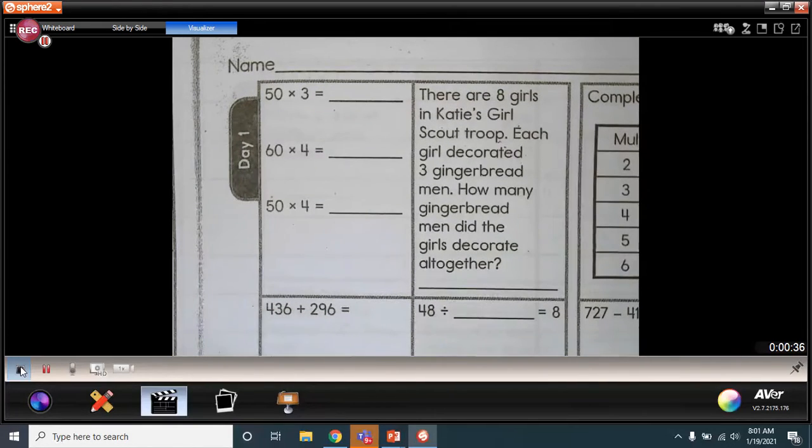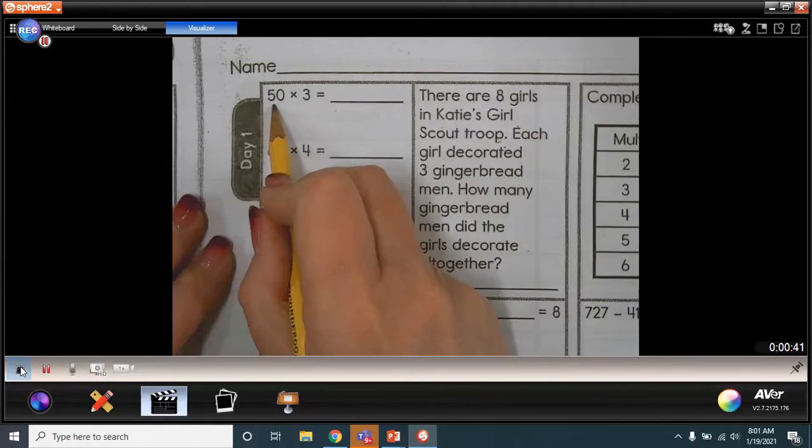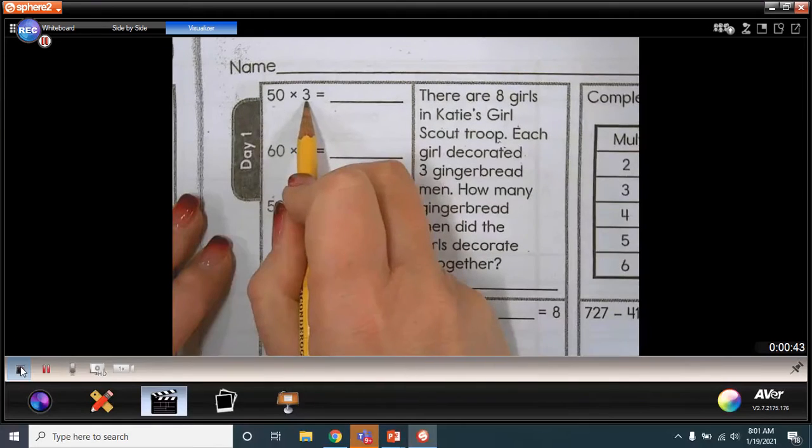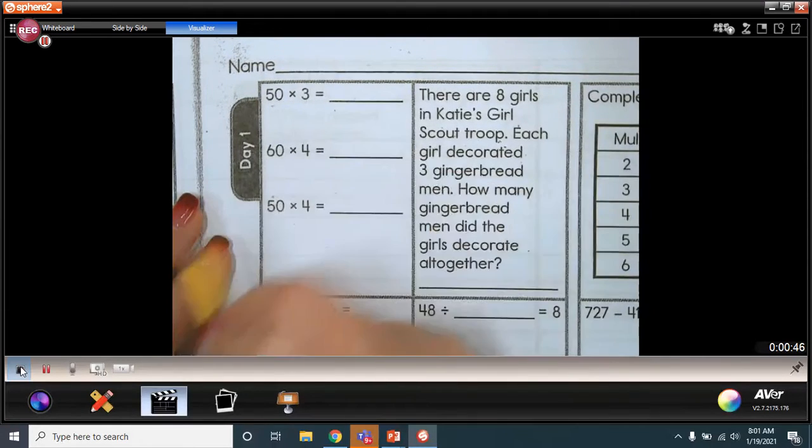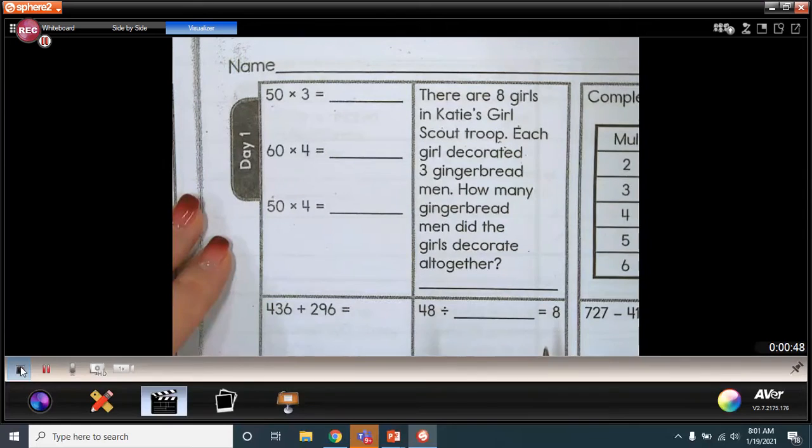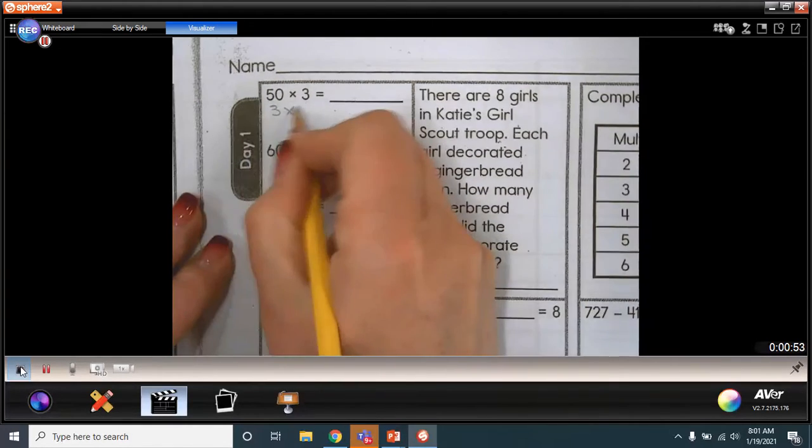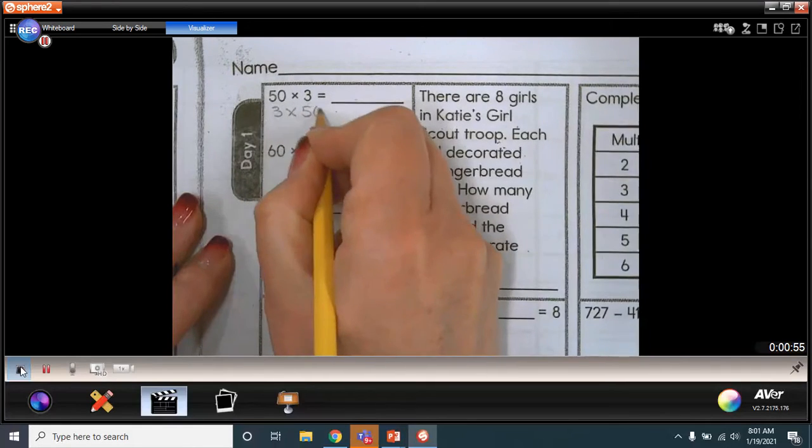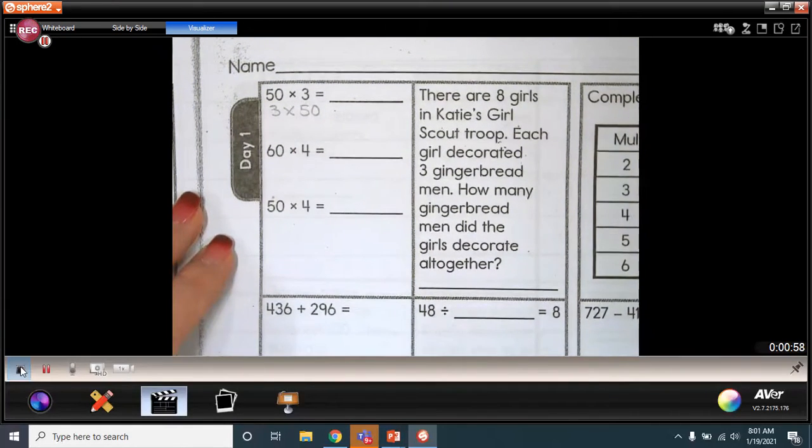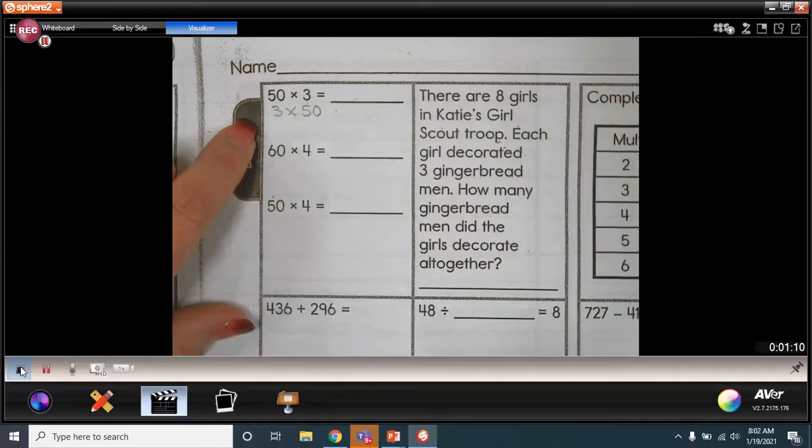Let's take a look at our first set of problems or equations. We have our factor, which is 50, our factor, which is 3, and our product. We are looking for the product or the total amount together. So if I had three groups of 50, remember I can use the order property to help me. What would be easier? Is it going to be easier to add three groups of 50 or 50 groups of three? That's a lot of threes.